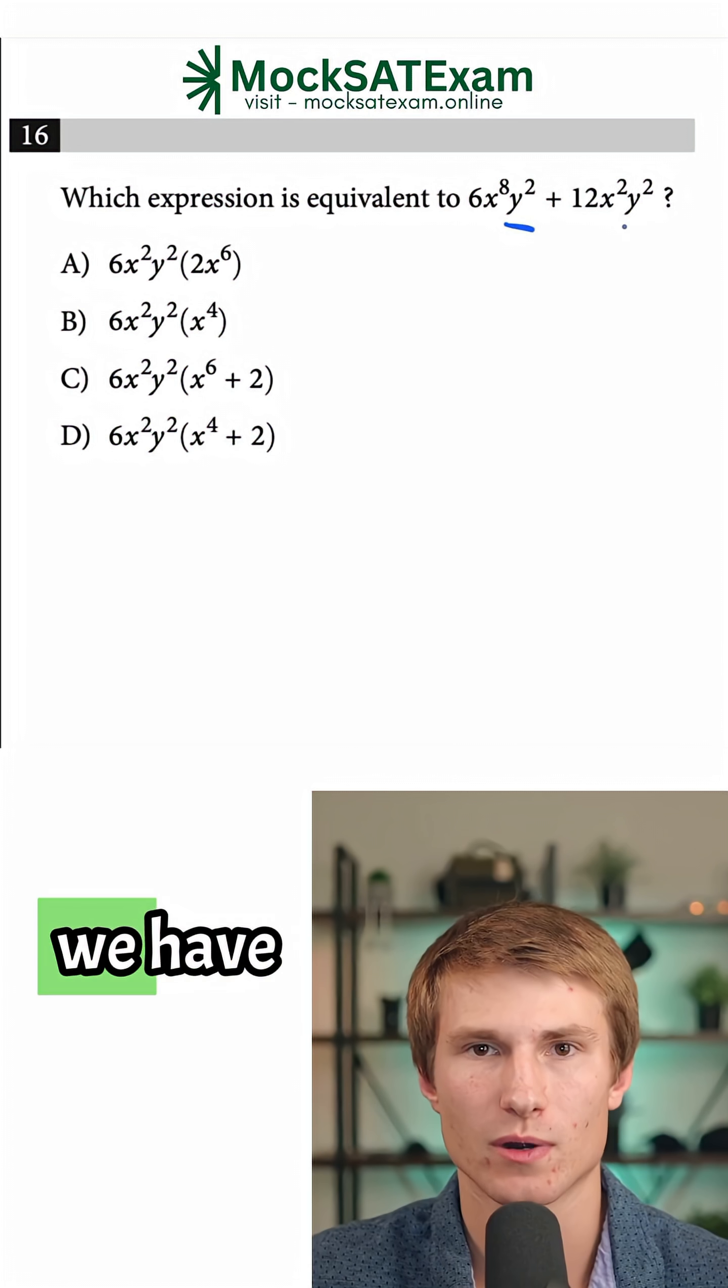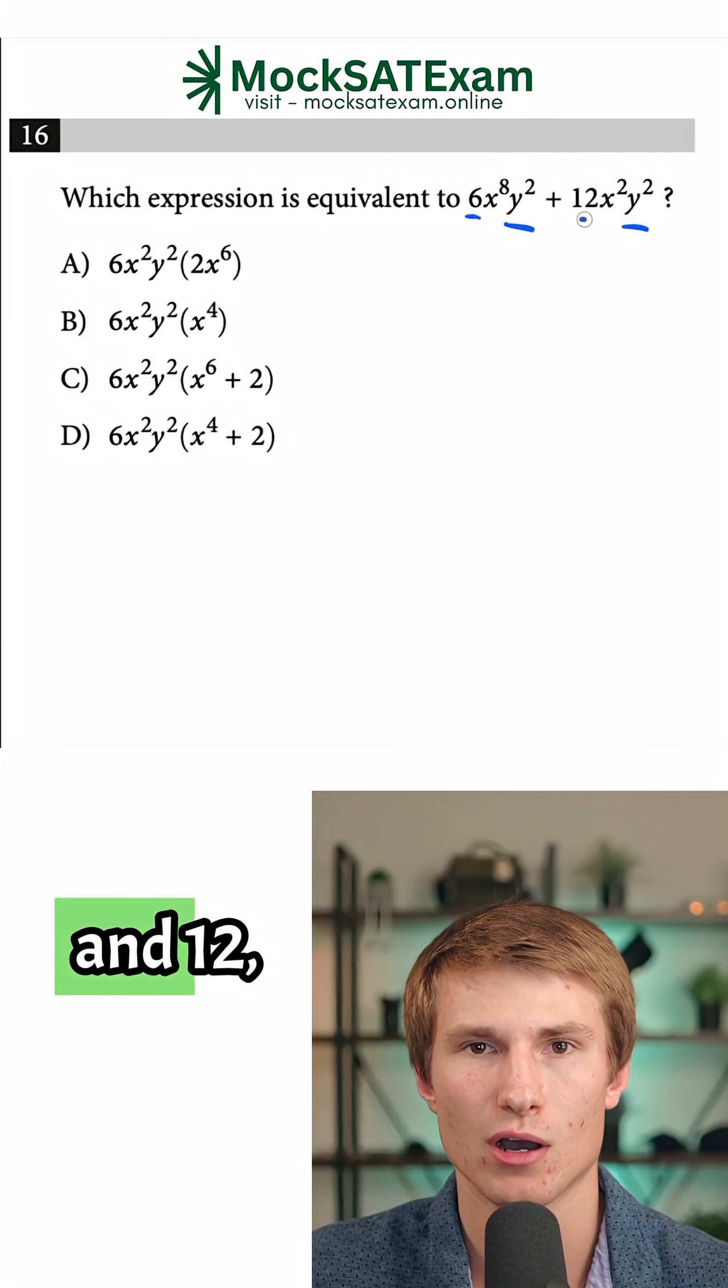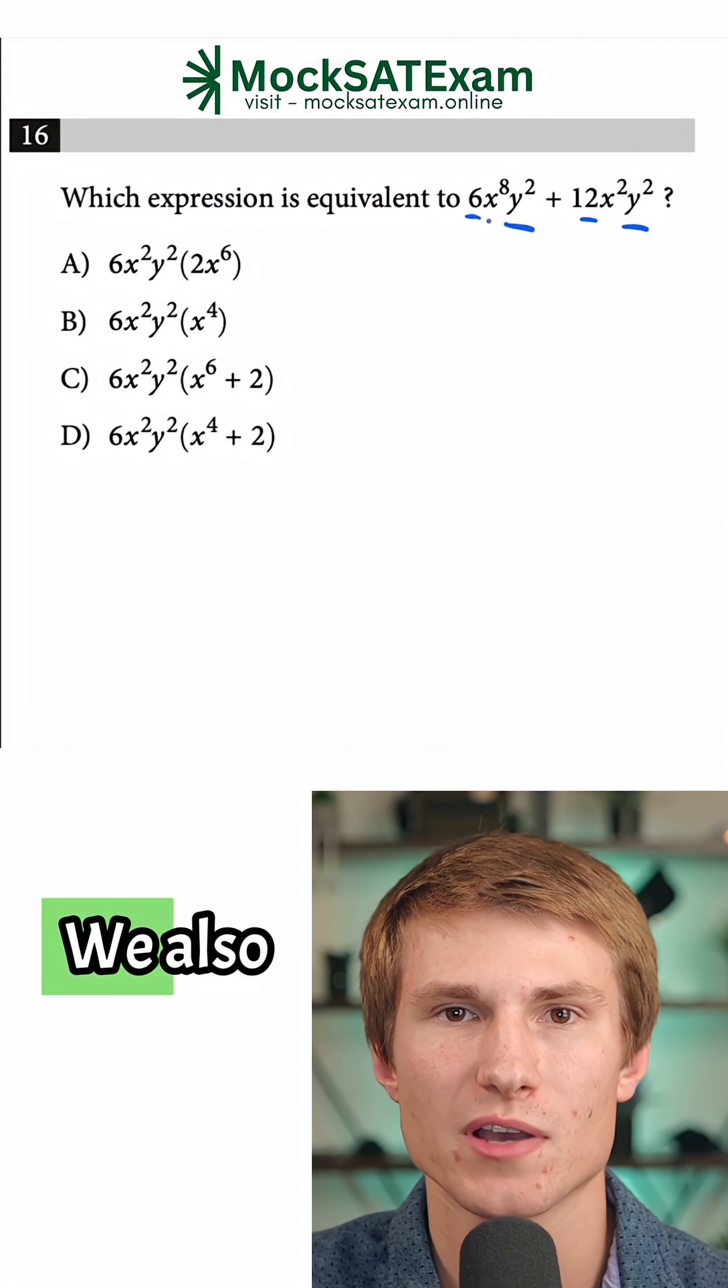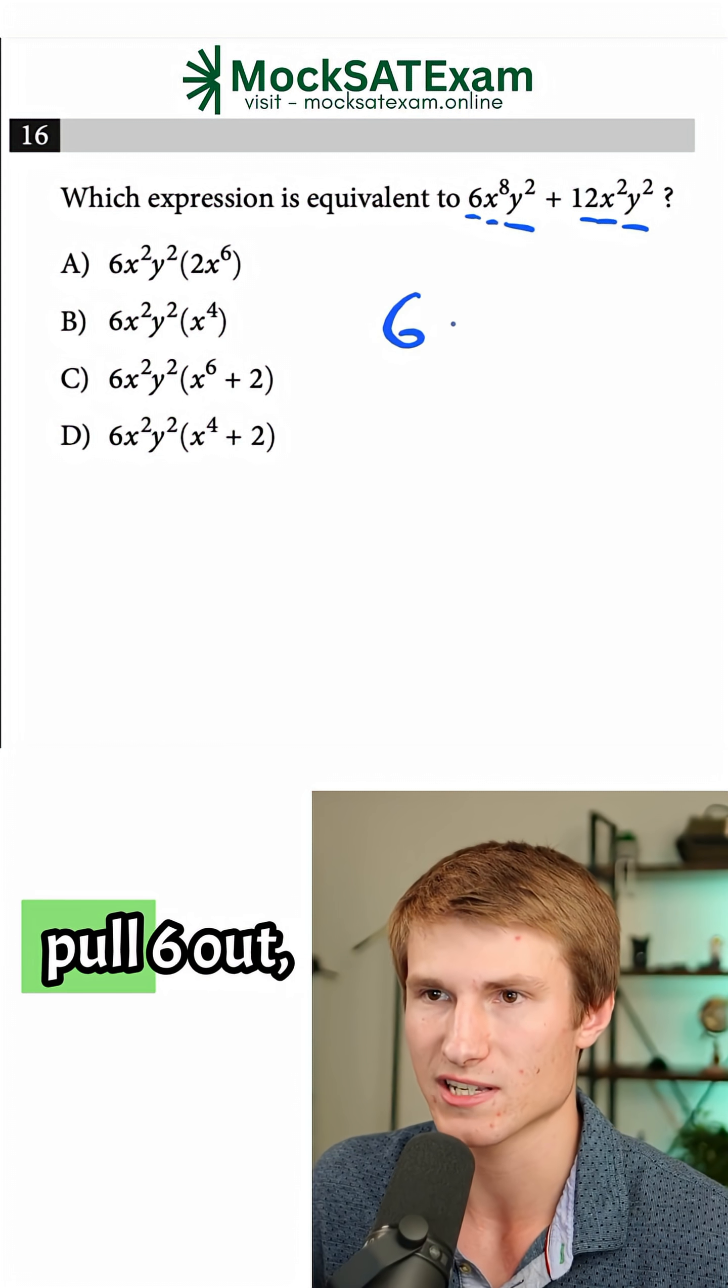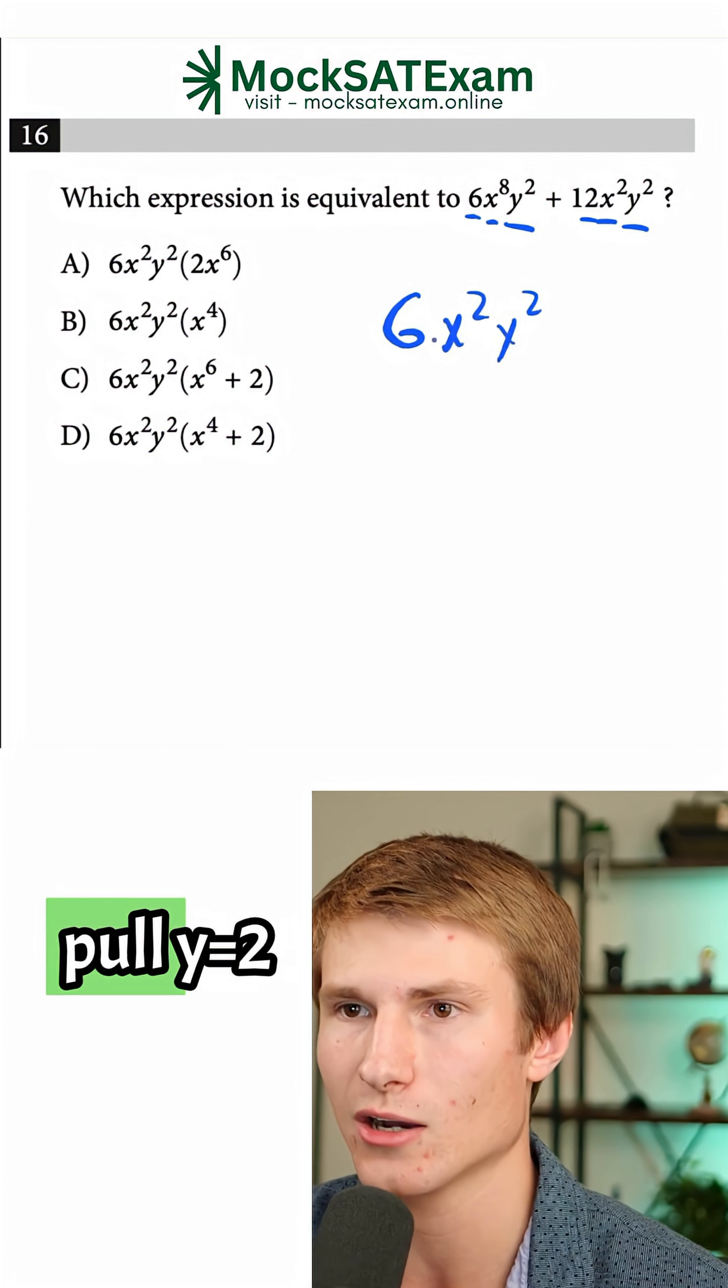As we can see, we have y^2 in both of them. We also have 6 and 12, which we can pull a 6 from. We also have x^8 and x^2. So the way we're going to do this is we're going to pull 6 out, we're going to pull x^2 out, and we're going to pull y^2 out.